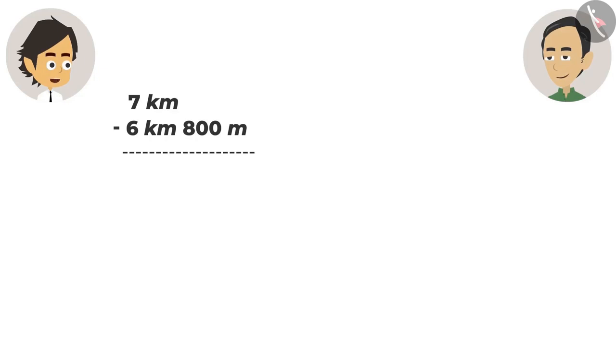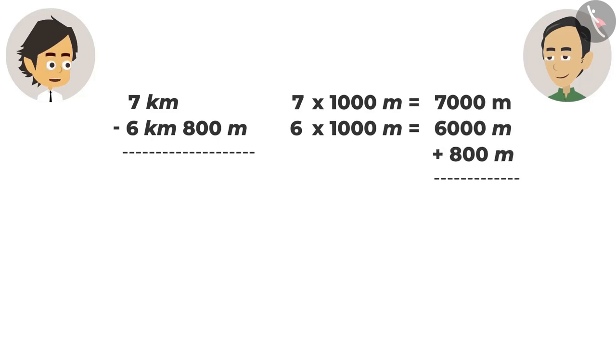If there is no meter written along with the 7 kilometer, then how can we deduct it? I cannot understand that. It's easy too. Do one thing. Convert both distances into meters. To convert 7 kilometers into meters, we will multiply 1,000 into it. So here it is 7,000 meters. Just like that, multiplying by 1,000 in 6 kilometers, the answer will come 6,000 meters. And adding 800 meters to it, the answer will be 6,800 meters. Absolutely right. Now they can be subtracted because the units of both are the same. The answer after subtracting them is 200 meters.